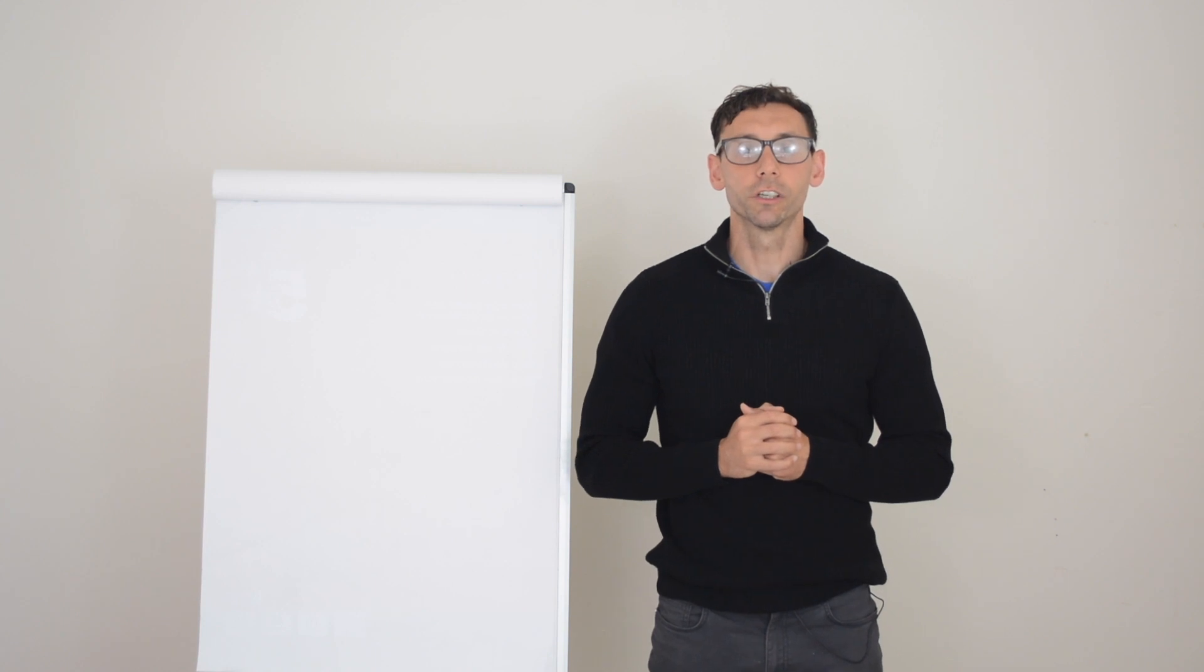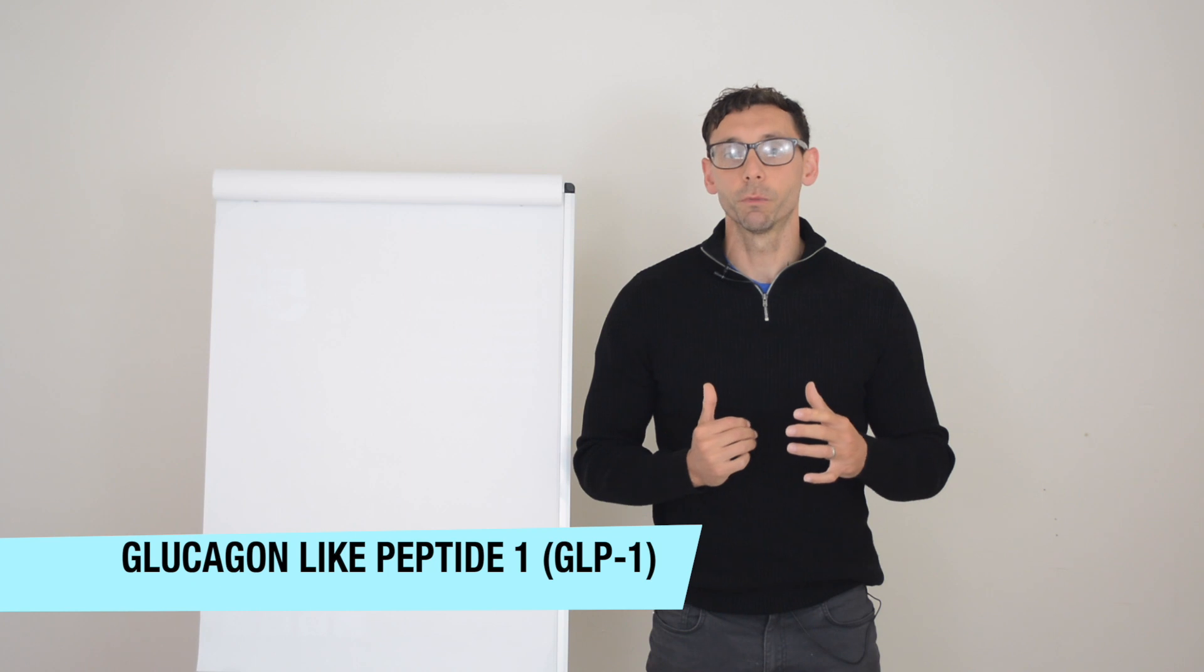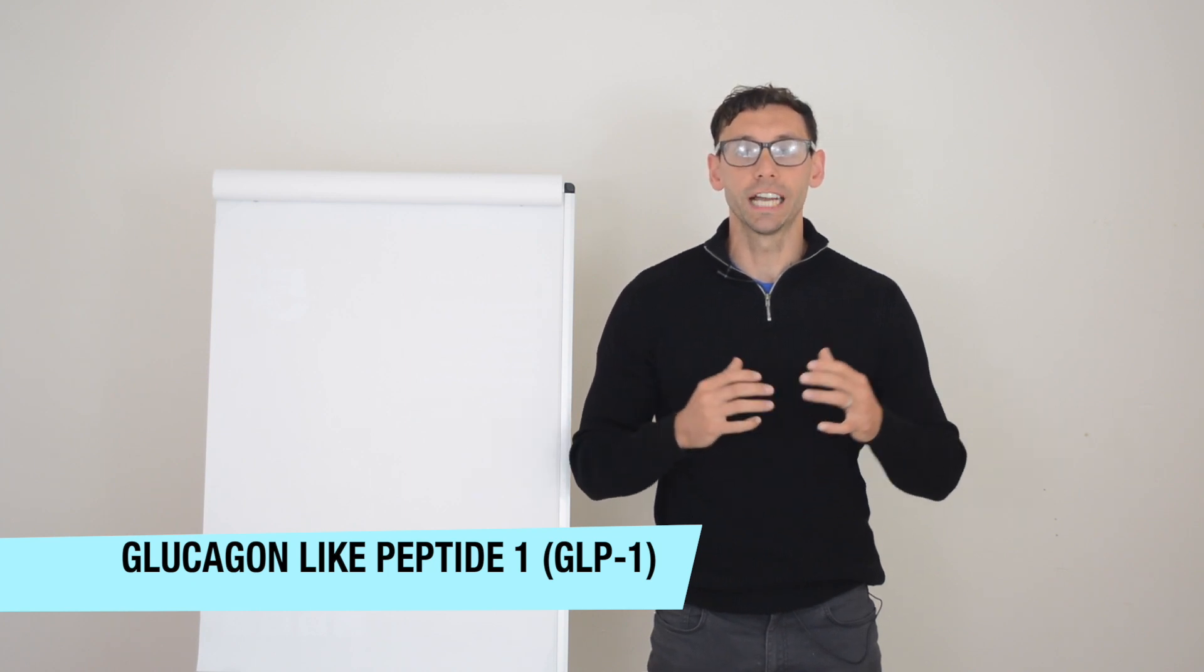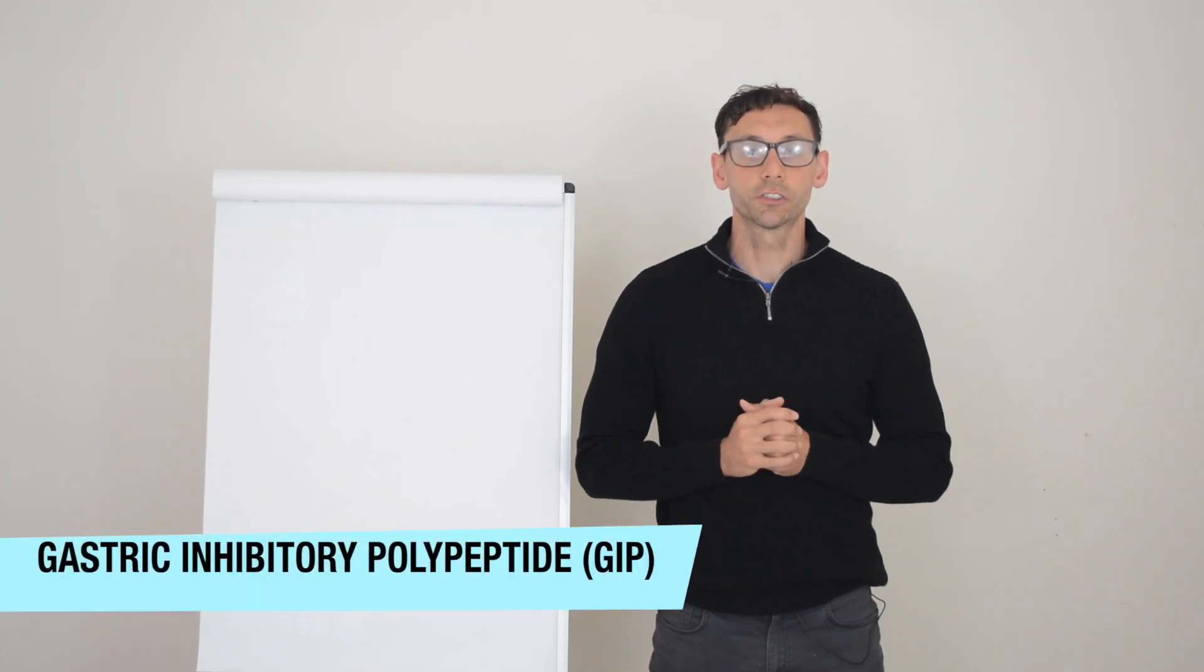Examples of these hormones are glucagon-like peptide 1, or GLP1, which we've actually visited in one of our previous medication videos as injecting this hormone is a type of diabetes treatment. Another example is gastric inhibitory polypeptide, or GIP.